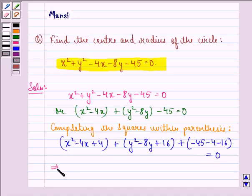Now this implies that x minus 2 the whole square plus y minus 4 the whole square is equal to 65.